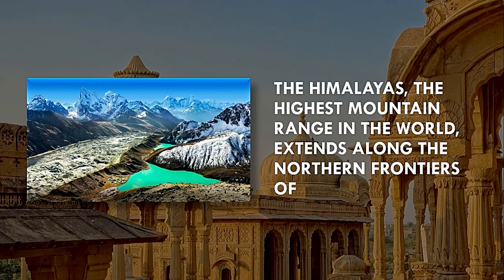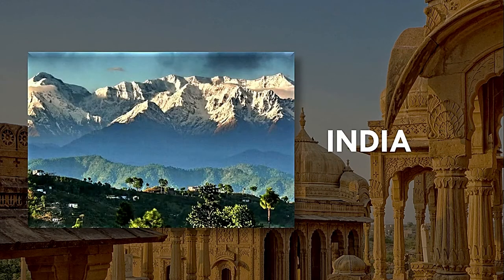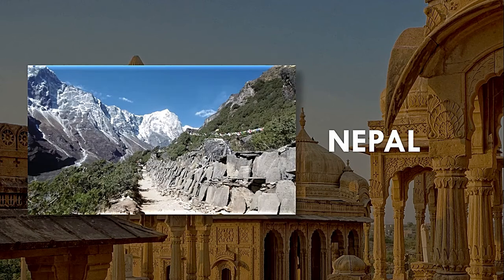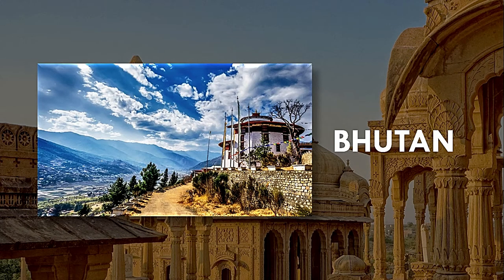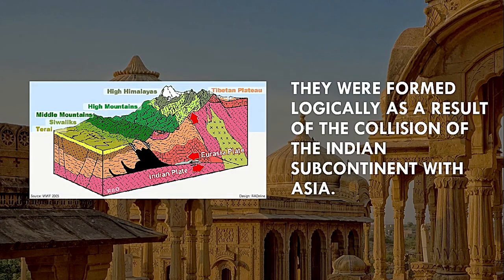The Himalayas, the highest mountain range in the world, extends along the northern frontiers of Pakistan, India, Nepal, Bhutan, and Myanmar. They were formed geologically as a result of the collision of the Indian subcontinent with Asia.